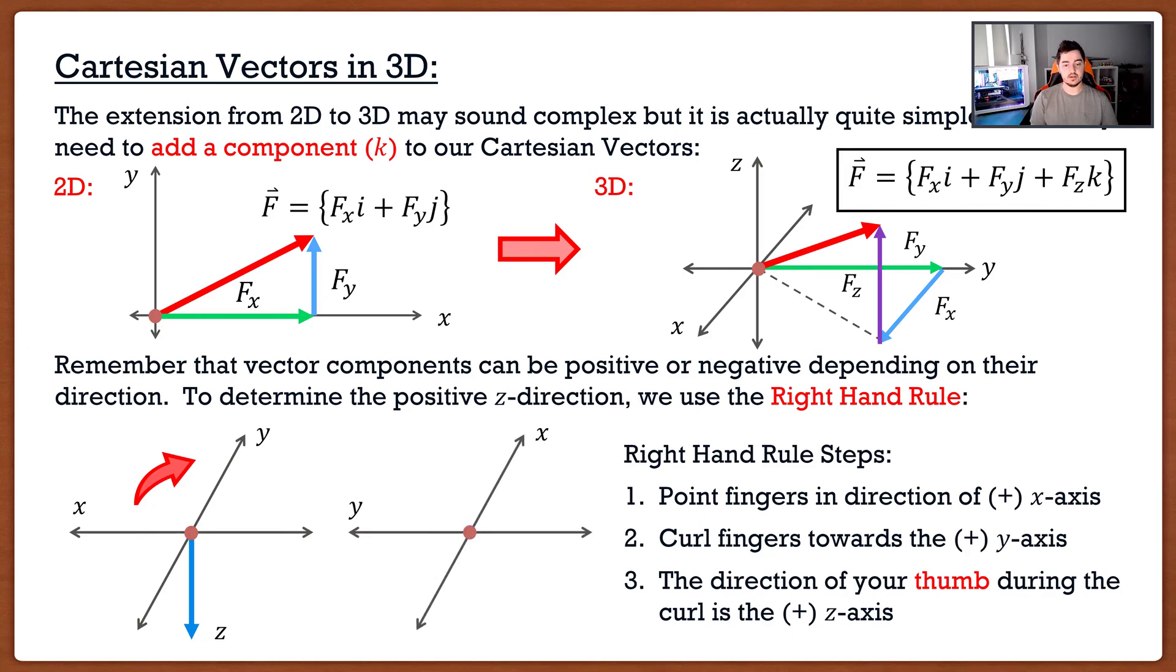Now let's look at the opposite scenario. In this case, we've flipped where the x and the y-axis are. So in this case, I'd be pointing towards the x, and I'm able to curl to the y-axis. And as we can see, my thumb is now sticking up. So again, I'm going to curl this way. My thumb is sticking up. Therefore, the positive z-axis in this case is actually upwards.